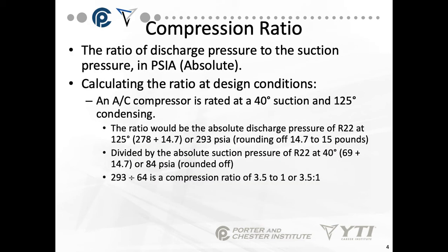The ratio of discharge pressure to suction pressure in PSIA — that's absolute pressure, different from gauge pressure — is called the compression ratio. To calculate the ratio at design conditions, we use a basic formula. For example, an air conditioning compressor rated at 40° suction and 125° condensing: the absolute discharge pressure of R22 at 125° is 278 plus 14.7, equaling 293 PSIA. Dividing by the absolute suction pressure of R22 at 40°, which is 69 plus 14.7 or 84.7 PSIA, we get 293 divided by 84 — a compression ratio of 3.5 to 1.